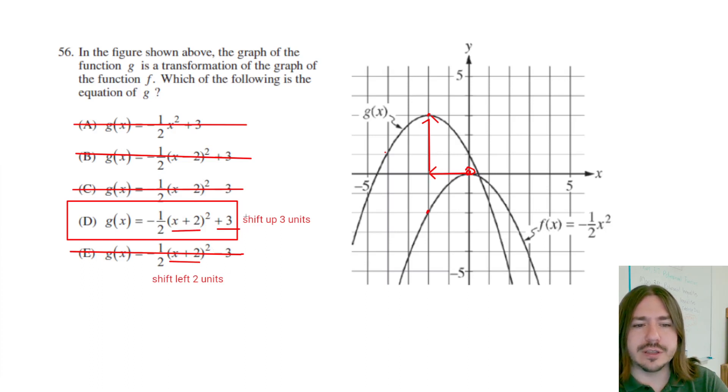With the vertical shift, it does shift kind of in the direction that you would think it would. Plus goes up, minus goes down. That's pretty much it for number 56. Thanks for watching, and y'all have a great day.